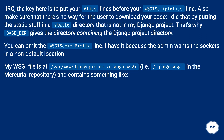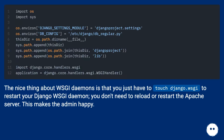My WSGI file is at .wsgi/django.wsgi in the Mercurial repository. The nice thing about WSGI daemons is that you just have to touch django.wsgi to restart your Django WSGI daemon. You don't need to reload or restart the Apache server. This makes the admin happy.